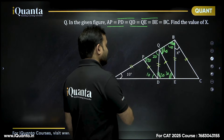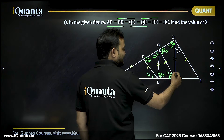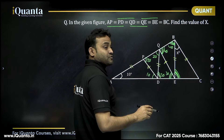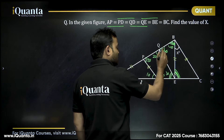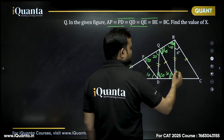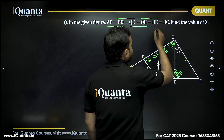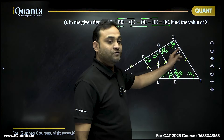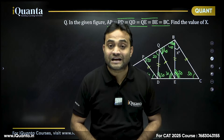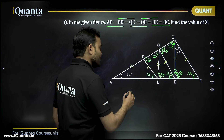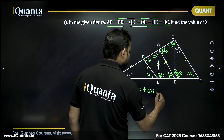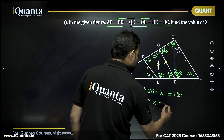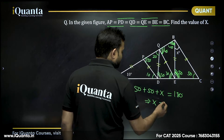In triangle ABE, the exterior angle BEC equals the sum of the two opposite interior angles: angle QBE (40°) + angle BAE (10°) = 50 degrees. Since BE = BC, this angle is also 50 degrees. To find x: the sum of all interior angles of the final triangle is 180 degrees. So 50 + 50 + x = 180, giving x = 80 degrees.